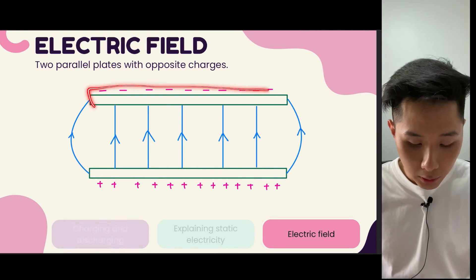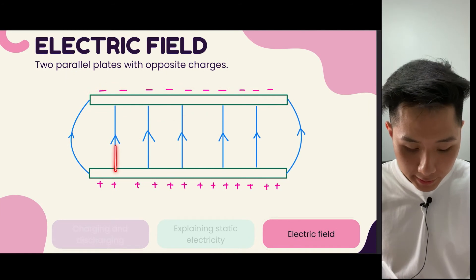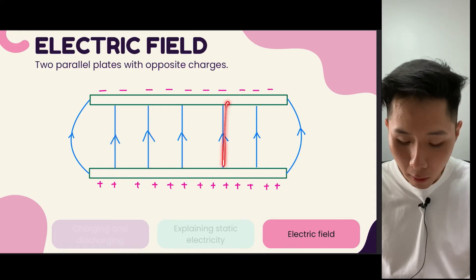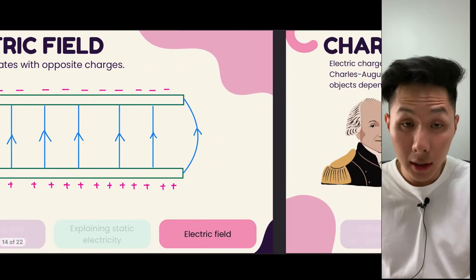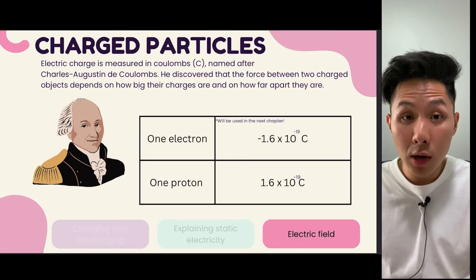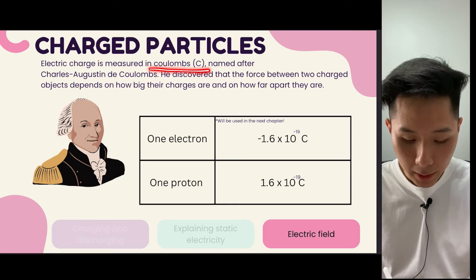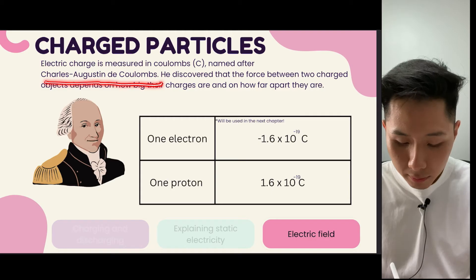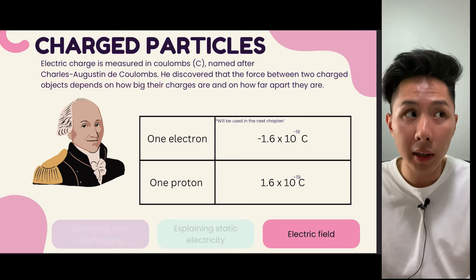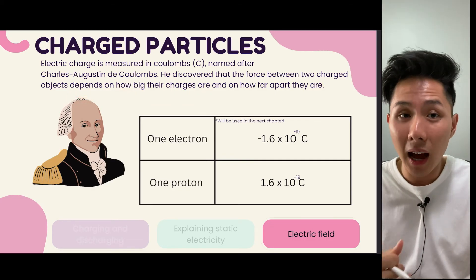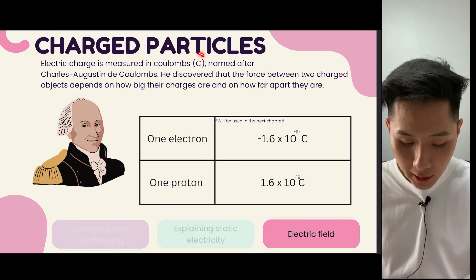If you have two parallel plates, the electric field line should be drawn from the positive plate to the negative plate. And for charged particles, charge is measured in terms of coulombs. The coulomb is named after the scientist Charles-Augustin de Coulomb, who discovered that the force — meaning attraction or repulsion — between two charged objects depends on how large the charge is.